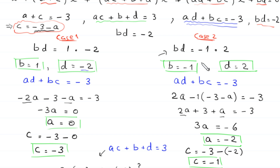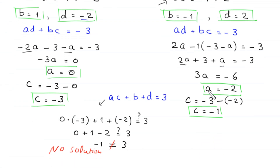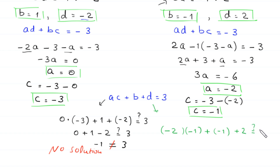We verify these values in the equation ac + b + d = 3: (-2)(-1) + (-1) + 2 = 2 - 1 + 2 = 3. This equals 3, so Case 2 is valid and we can proceed with these values.